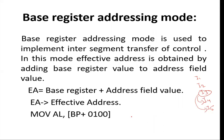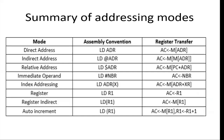Next is the base register addressing mode. In this mode we implement inter-segment transfer of control — that is, if we need to transfer control to another segment within the program, we use this mode. The effective address is calculated by adding some address field value to the base register. For example, 'MOV AL, BP+0100': whatever the base register BP contains, we add 0100 to get the effective address, then fetch the operand and move its content to register AL.